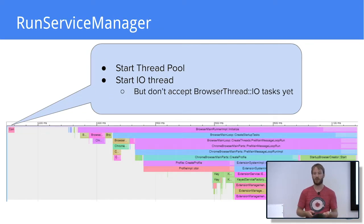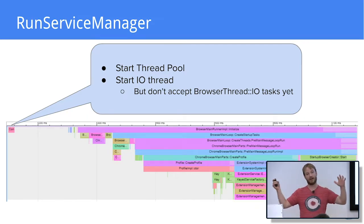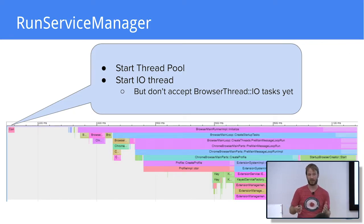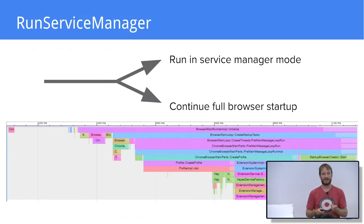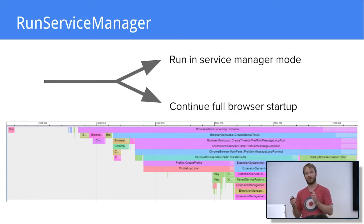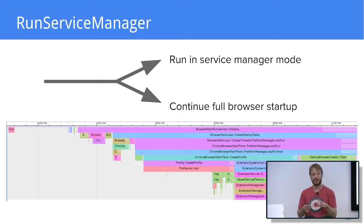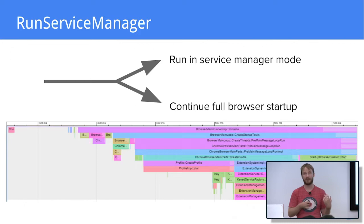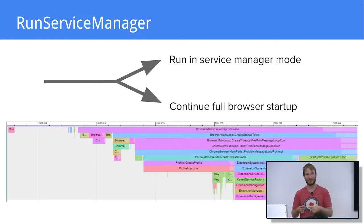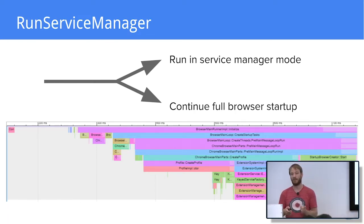Next, we start the thread pool. The thread pool that we created before now starts having threads, which means tasks can start running on other threads. From that point, we need to be careful about potential data races. The process can then decide to run in service manager mode or continue with full browser startup. Chrome can run in a lightweight mode where only some services are started — for example, launching only the download manager to resume a download from a previous session. For this presentation, we will continue to look at full browser startup.